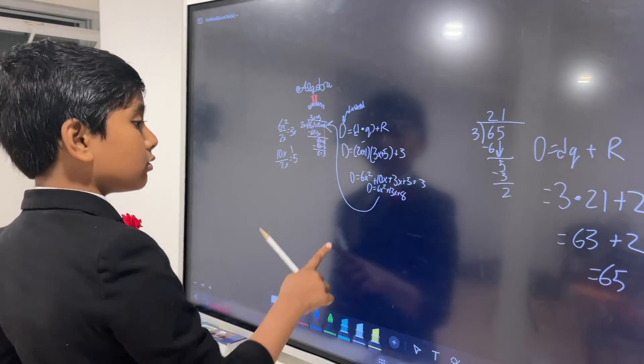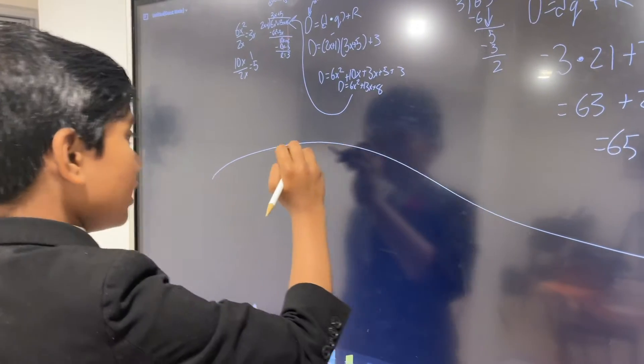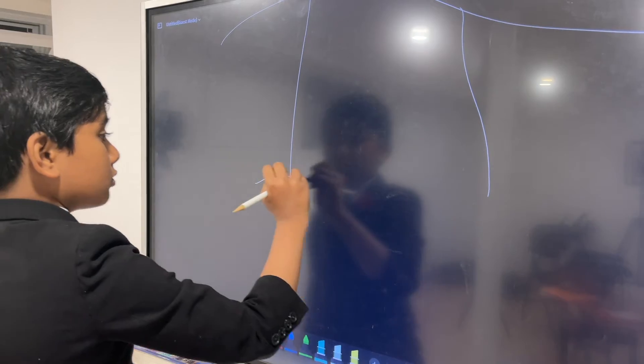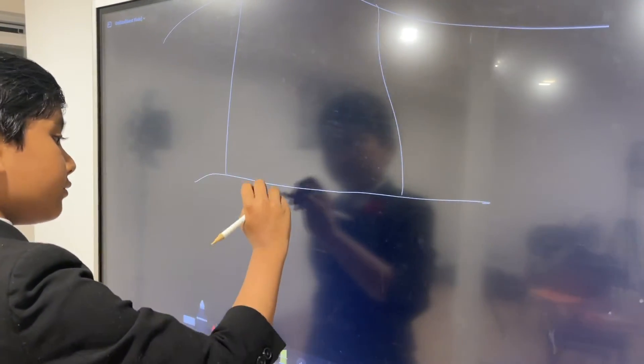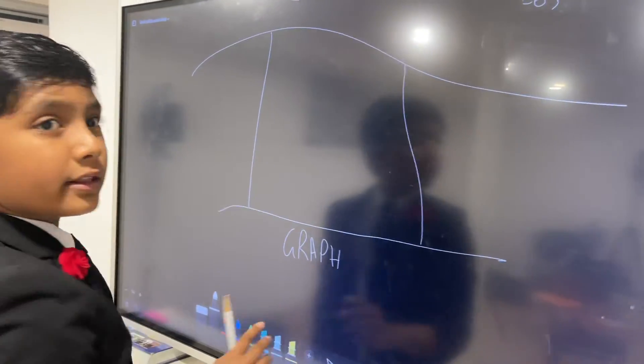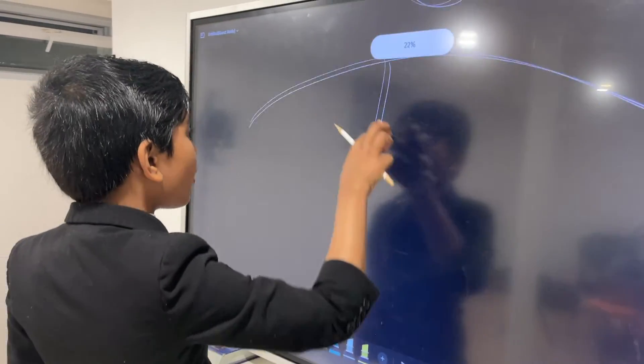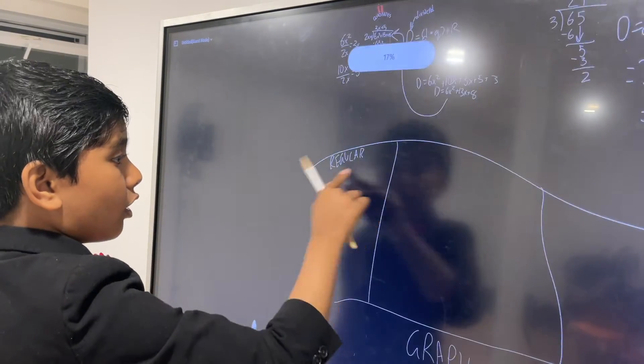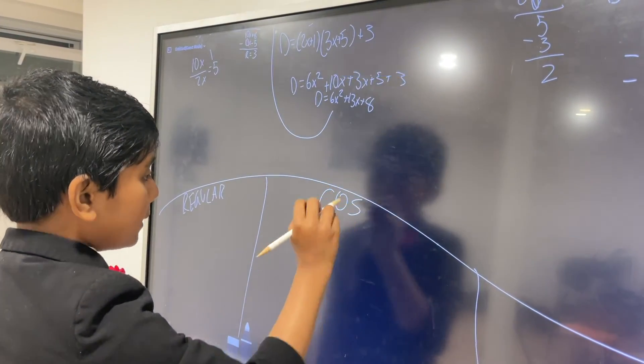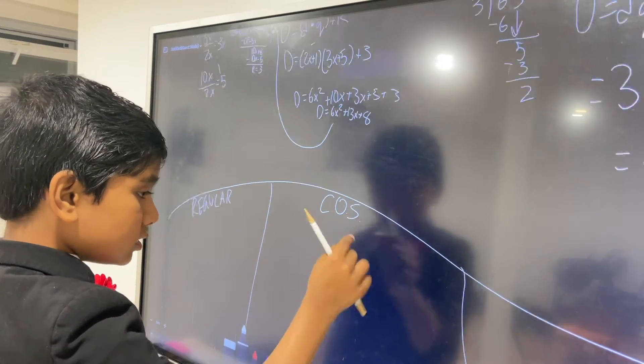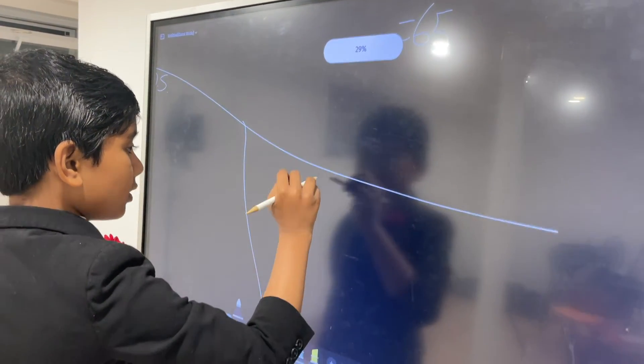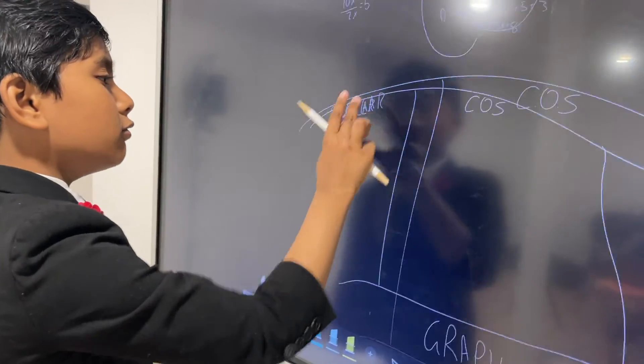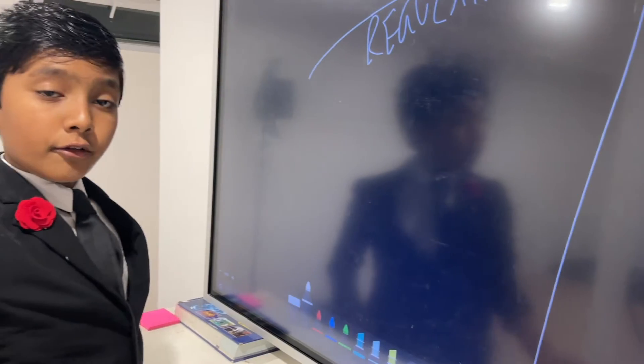Now, next, we're going to be looking at the 3 ways to factor a quadratic. And then finally, we're going to be looking at how to graph one. So we're going to be looking at 3 ways. First of all, regular. Second of all, I'm not going to reveal to you the full name, but C-O-S. And the third is going to be the QF.